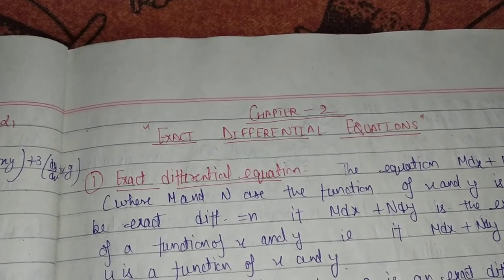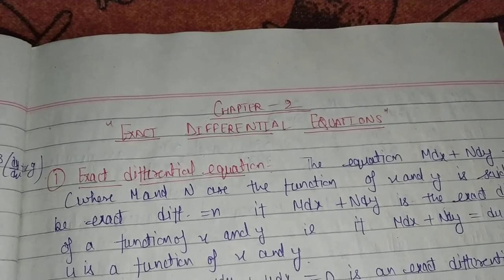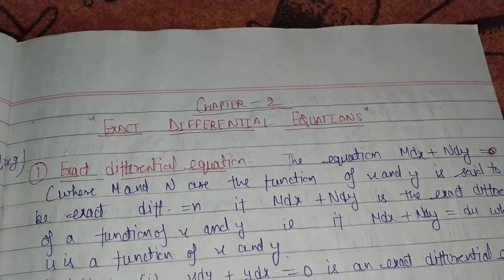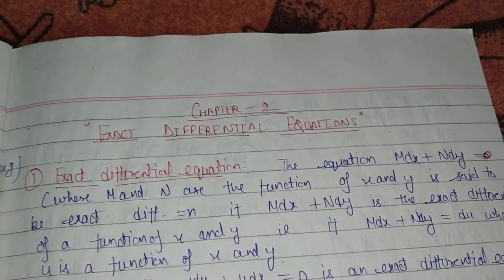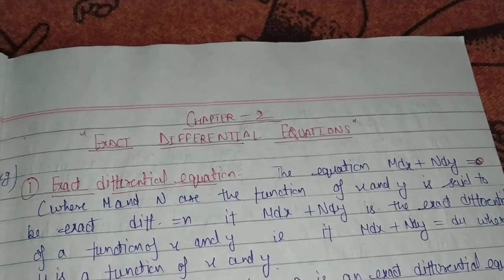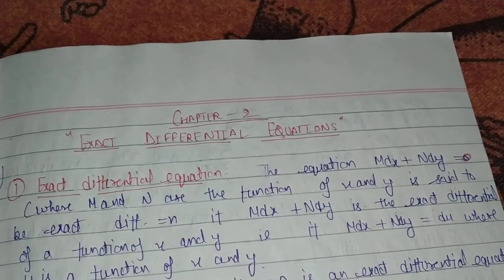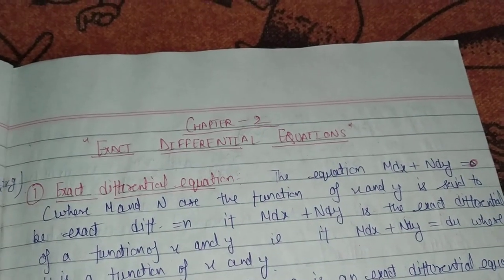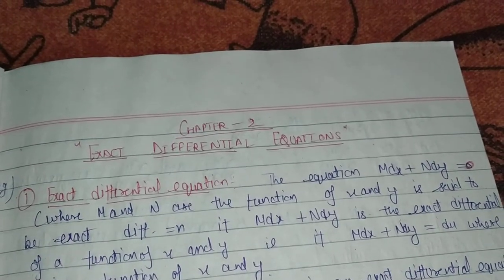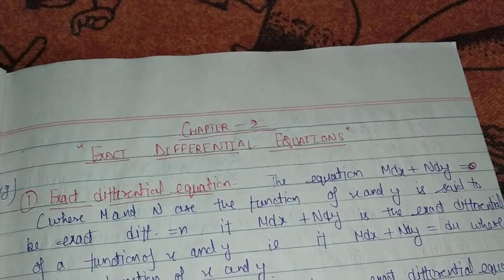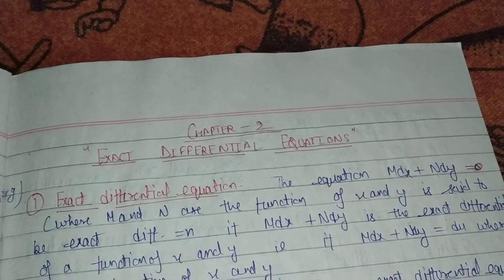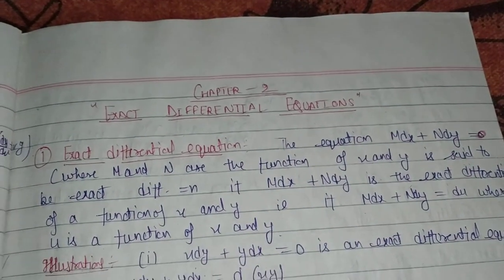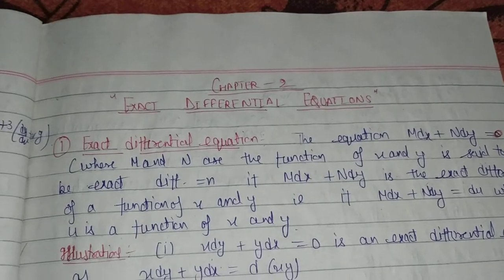What is the exact differential equation? The equation mdx + ndy = 0, where M and N are functions of x and y. The equation will be exact when mdx + ndy = du, where u is a function of x and y.